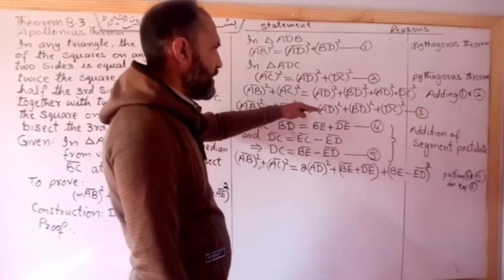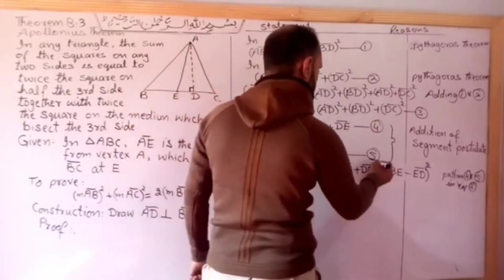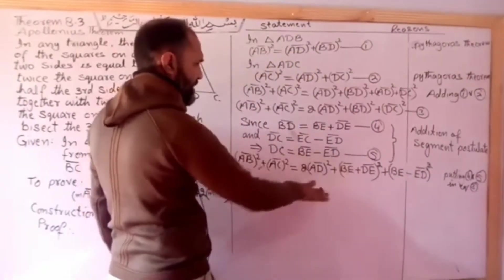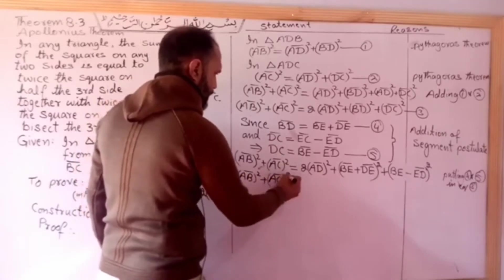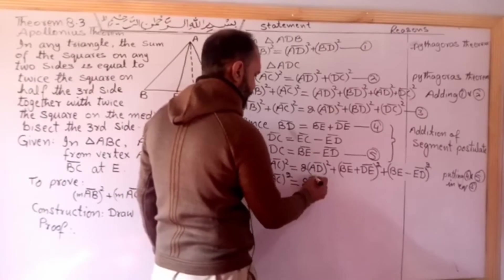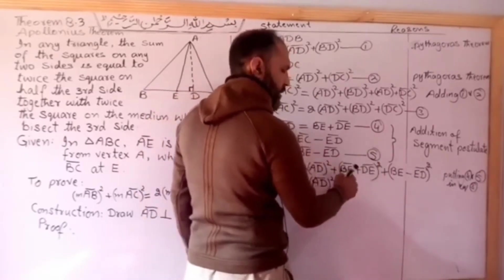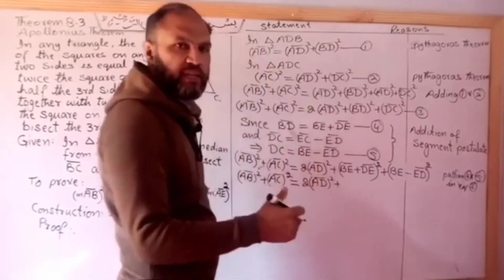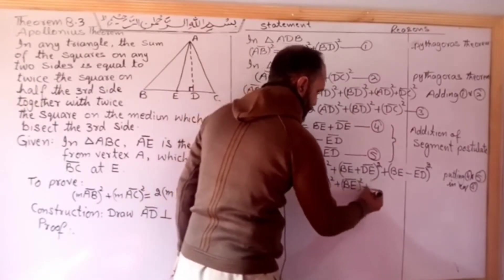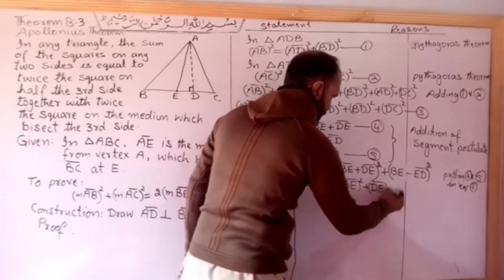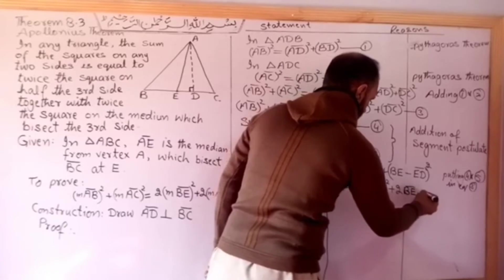Since BD equals DC, the BD value equals DC value. Now we will simplify: AB squared plus AC squared equals 2 times AD squared. We will now solve using the a plus b whole square formula.